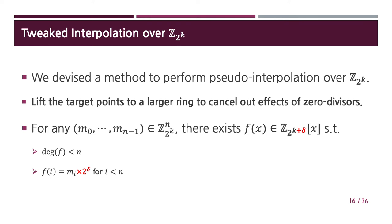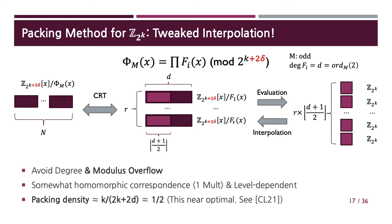However, our story does not end here. We devised a method to perform something very similar to interpolation over Z2K. We call this method tweaked interpolation. The main idea is to lift the target points to a larger ring to cancel out effects of zero divisors. Precisely, when n Z2K messages are given, we can find a not-so-large delta so that there exists a polynomial over this lifted ring, whose degree is less than n, and its evaluation at i equals the i-th message multiplied by 2^delta for all i.